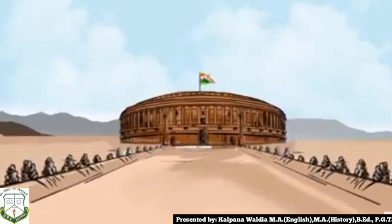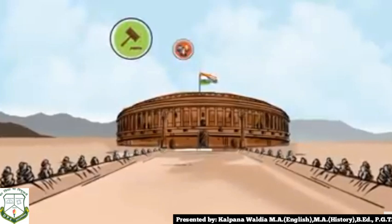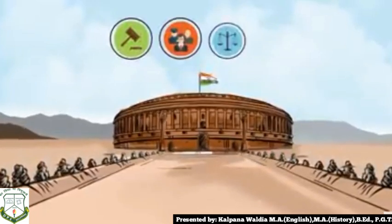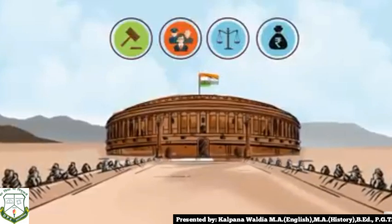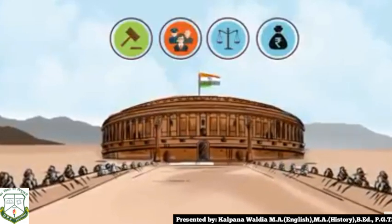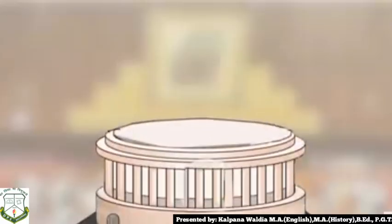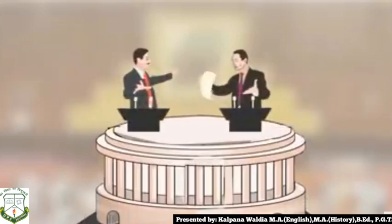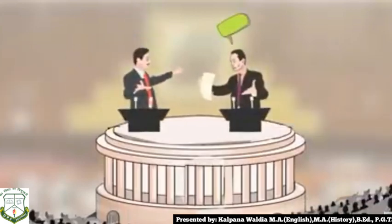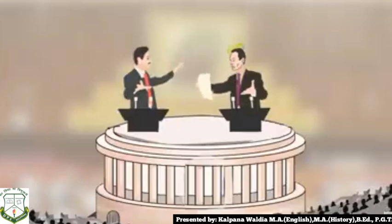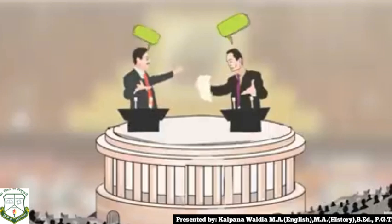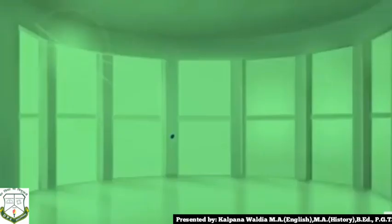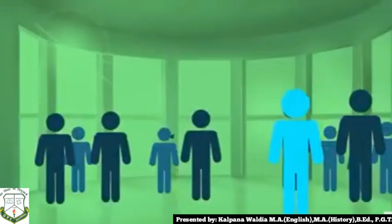Parliament is needed as the final authority to make the law in a country. Parliament exercises control over the working of the government. Parliament controls the expenditure of the government and controls the public money. As the highest forum of debate and discussion, it decides public issues and national policies. There are two houses of parliament in India: the Lok Sabha and the Rajya Sabha.